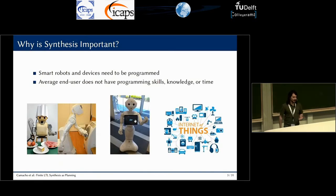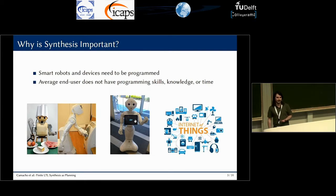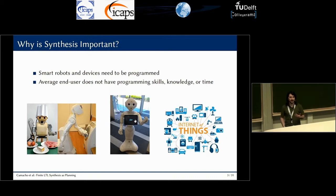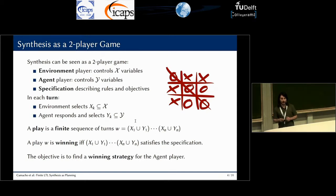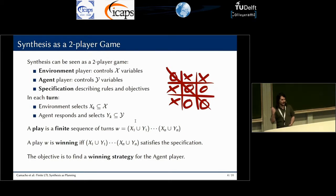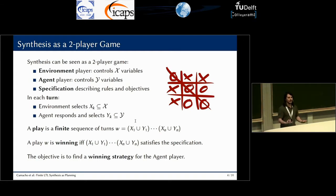Synthesis is an important task. Just think about all the amount of intelligent devices surrounding us — everybody out there should be able to tell the machines what to do. Synthesis is often interpreted as a two-player game where the environment player controls a set of X variables and the agent player controls a set of Y variables. And then we have a specification that tells us what are the rules of the game and what are the goals of the agent player.